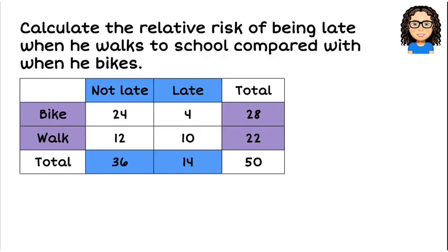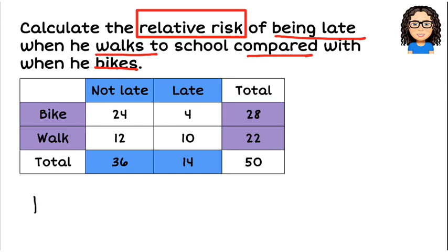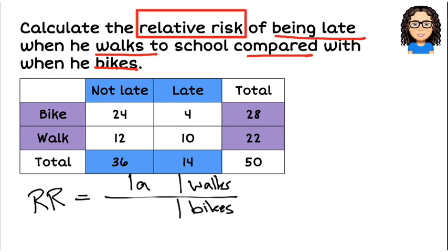Let's try this. Calculate the relative risk of being late. Okay, relative risk, there's a big clue. We want the relative risk of being late when he walks compared with when he bikes. So in terms of my relative risk, I want to compare when he walks to school versus when he bikes to school. And I want to look at the chance that he is late given that he walks versus that he is late given that he bikes. And I want the probability of that conditional probability divided by the other. So those are the two probabilities which you actually just found.